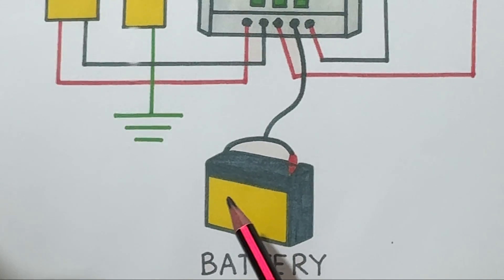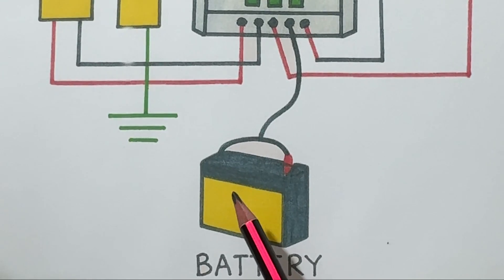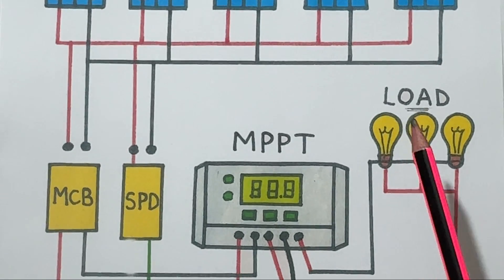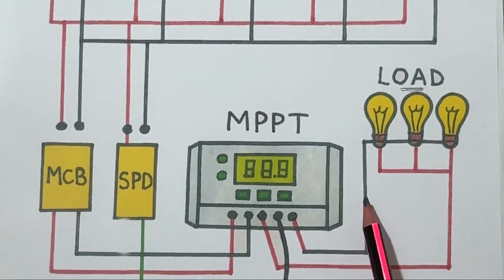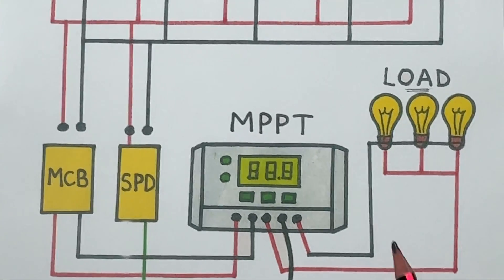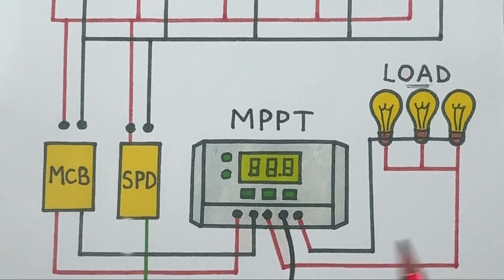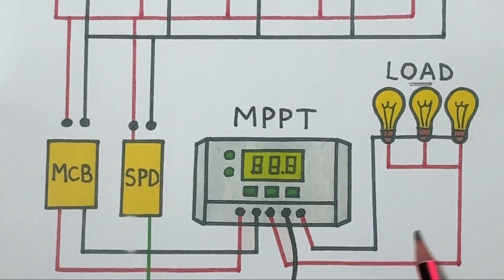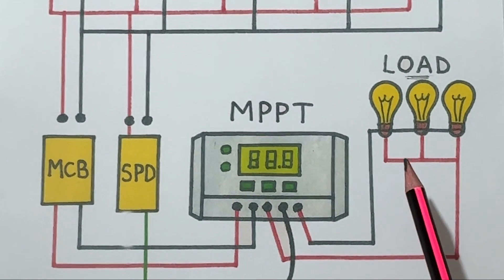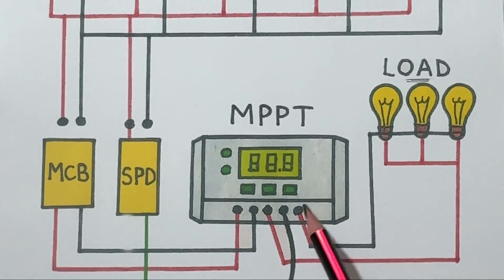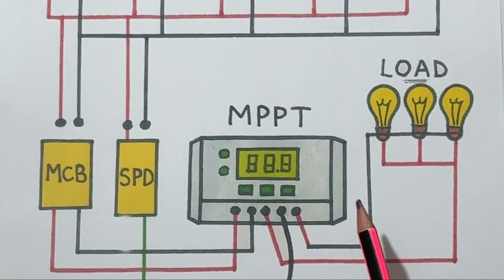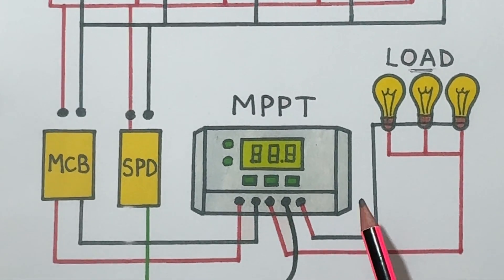Finally, we have the load section, represented here by the light bulbs. This could be anything: lights, fans, or any DC powered appliances. The MPPT controller automatically sends power to the load whenever energy is available, either directly from the panels during the day or from the battery at night. So the load always has a steady supply of power, whether the sun is out or not.